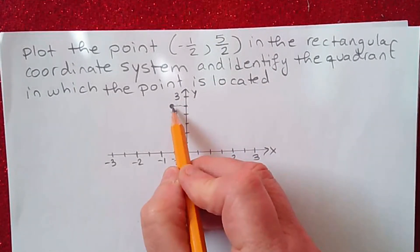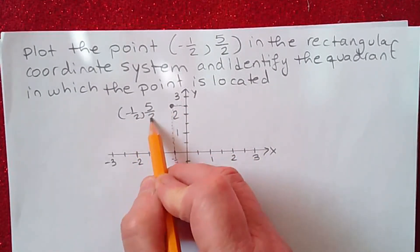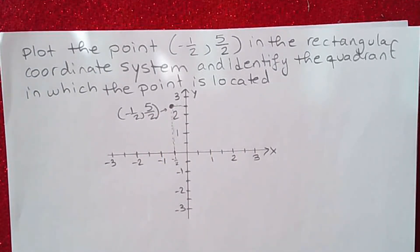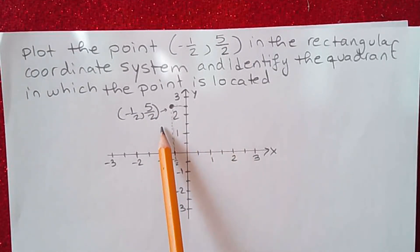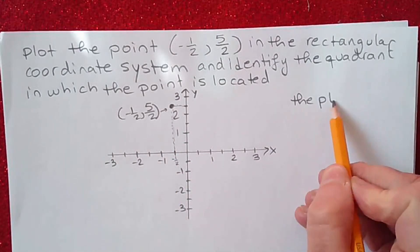This point right here is negative one-half, five over two. This is, as you can see, in quadrant two. So the point is located in quadrant two.